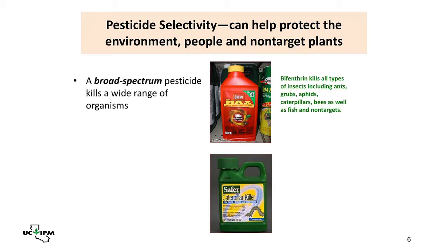A broad spectrum pesticide kills a wide range of organisms. For example, this bifenthrin insecticide — Ortho Max — kills all kinds of things: ants, grubs, aphids, caterpillars, and also bees, fish, and various other non-target organisms. It's the type of insecticide people used to like to have in their garage because it killed everything. But the problem is it also kills our beneficials and our bees.